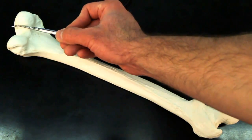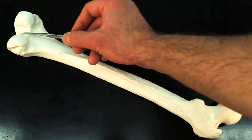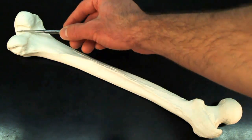Right in between the two, this indent is the intercondylar fossa.